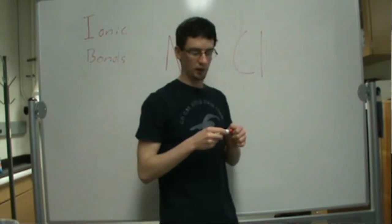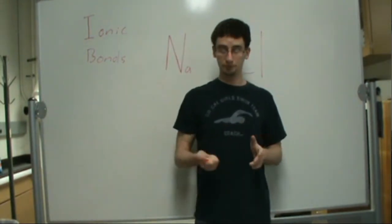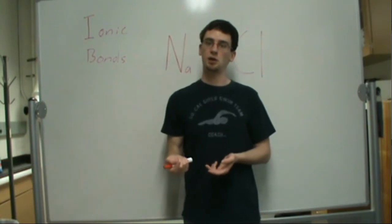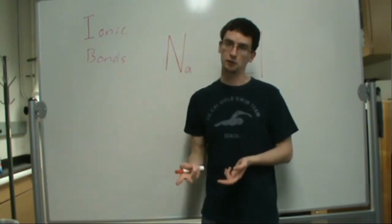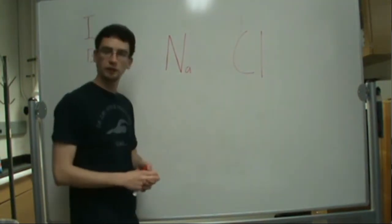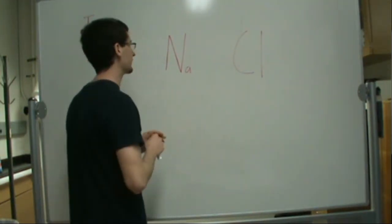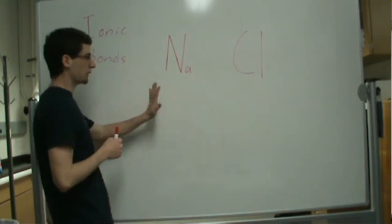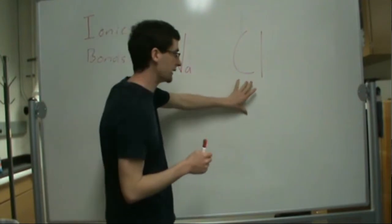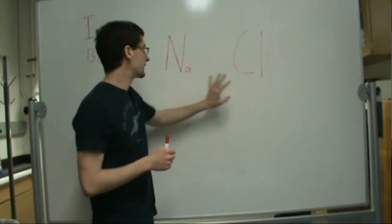We'll talk about atomic orbitals and atomic radii in different tutorials. For now, let's just concern ourselves with the ionic bonding that's going on in this situation. From periodic trends, we know that sodium is much less electronegative than chlorine.